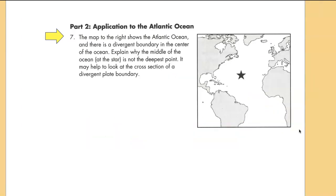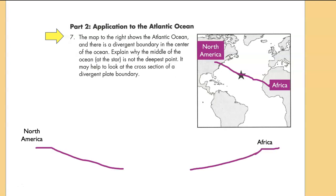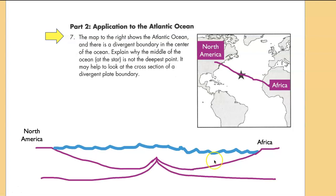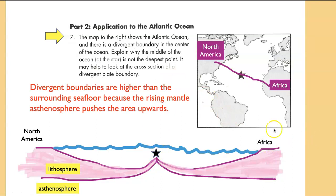Finally there's this question about the depth in the ocean. They're asking you to explain why where the star is located it's not the deepest point in the ocean. So I'm going to draw a cross section here that you can draw with me, from North America to Africa. The divergent zone is elevated relative to the rest of the surrounding sea floor. The star in this picture is essentially right here. Divergent boundaries are higher than the surrounding sea floor right here, because the rising mantle in the asthenosphere pushes upwards. That's why. And of course that's part of mantle convection which eventually will go sideways and back down again.